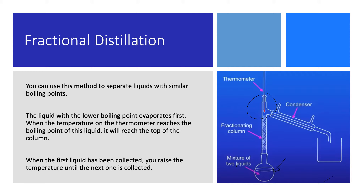In this beaker we have the solution — a mixture of two liquids. Unlike simple distillation, we have a fractionating column, which is filled with glass beads. The liquid with the lower boiling point evaporates first and passes through the glass beads, reaching the thermometer. The thermometer temperature has to reach the liquid's boiling point and remain constant. Once it does, the vapour passes through the condenser — just like in simple distillation — and one of the liquids is separated.